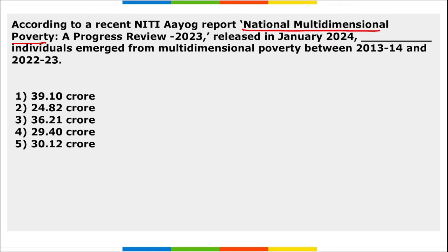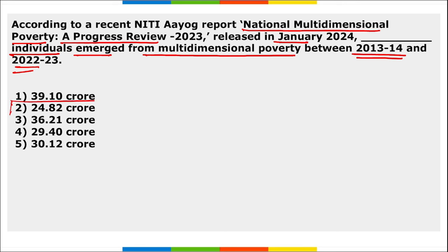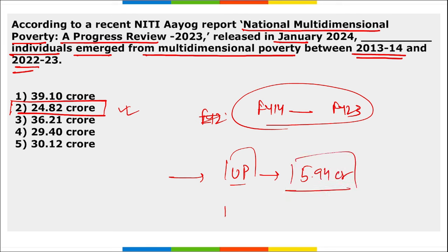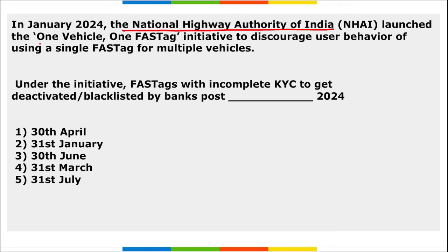According to NITI Aayog's report 'National Multidimensional Poverty: A Progress Review 2023,' released in January, a total of 24.82 crore individuals emerged from multidimensional poverty between FY2013-14 and FY2022-23. Uttar Pradesh topped the list with 5.94 crore people emerging out of poverty, followed by Bihar and Madhya Pradesh.